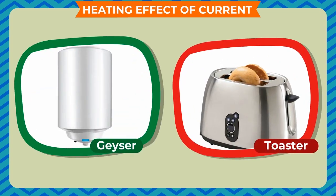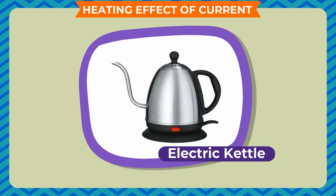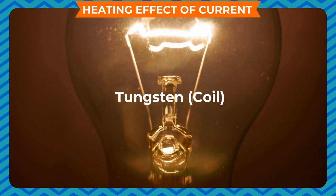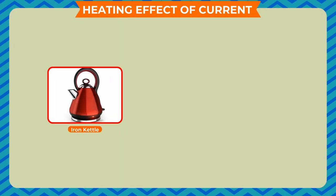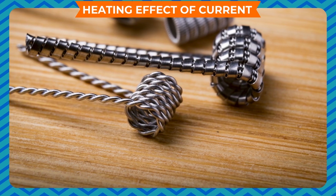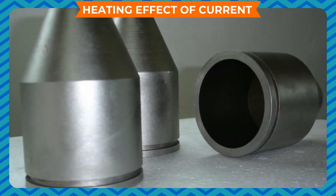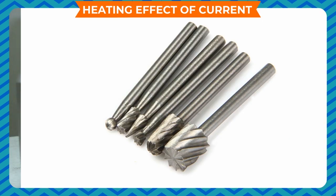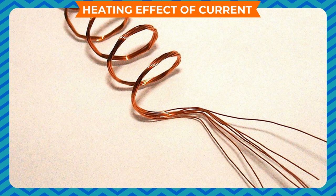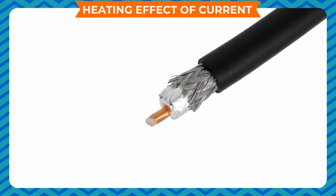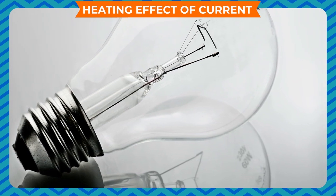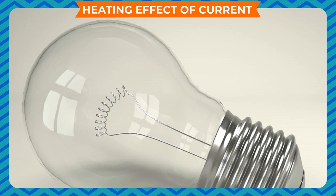These appliances include geyser, toaster, electric iron, hairdryer, and electric kettle. The filament of an electric bulb is made of tungsten, while coils in electric appliances like iron, kettle, geyser, and toaster are made of nichrome. Tungsten and nichrome have the ability to withstand very high temperature without melting. Tungsten does not allow the current to pass through it easily. Longer and thinner wires produce more heating than shorter and thicker wires. This is why the filament wire of a bulb is made very thin and is given a helical shape to increase its length.